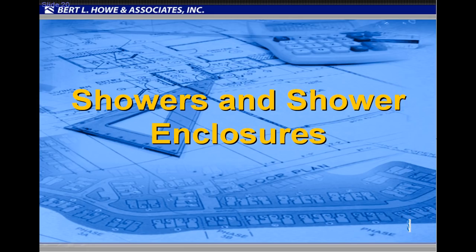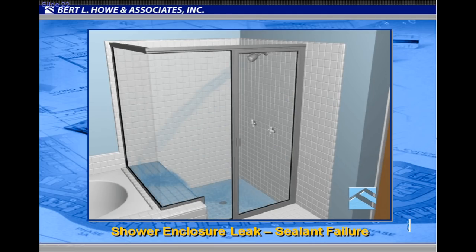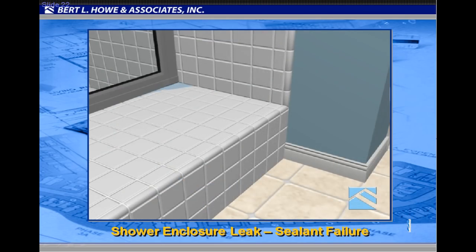Showers and shower enclosures. Typically alleged shower issues include leaks at enclosures, tears in the membrane behind the tile, and blocked or plugged weep assemblies. Often, leaks at shower enclosures are the result of poorly installed or missing sealant at the interface between the shower enclosure frame extrusion and the shower pan or tile assembly.